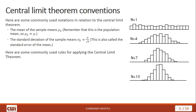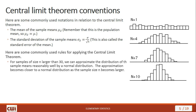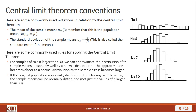For samples of size n larger than 30, we can approximate the distribution of the sample means reasonably well by a normal distribution. The approximation becomes closer to a normal distribution as the sample size n becomes larger. When our sample size is less than 30, we do not approximate with a normal distribution. However, if the original population is already normally distributed, then we do not have that threshold of 30 to worry about — for any sample size, the sample means will be normally distributed.